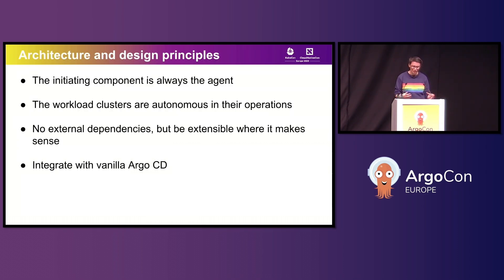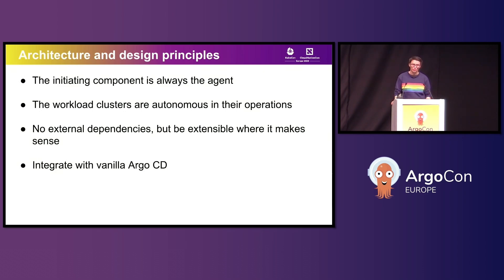Let's talk about the architecture of Argo CD agent and the design principles that have guided its development. First and most importantly, the initiating component is always the agent. In terms of topology, the agents need to know how to reach the principal, but the principal doesn't need to know any details about the location of the agents. Your agents and the workload clusters that they're on are not required to be externally reachable, as long as they have a way to communicate back to the control plane.